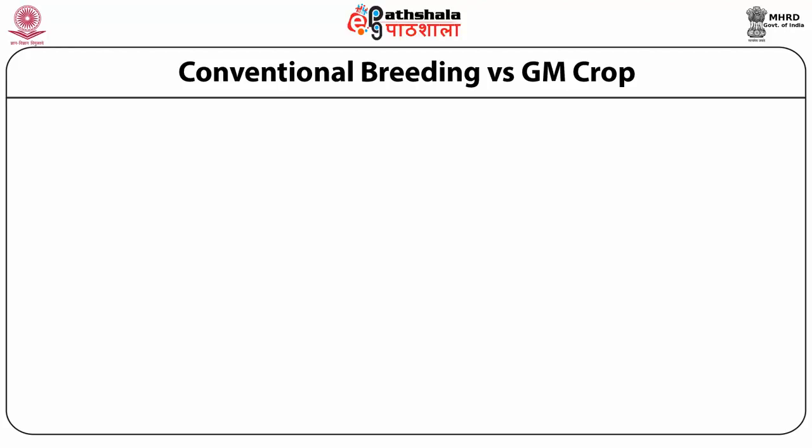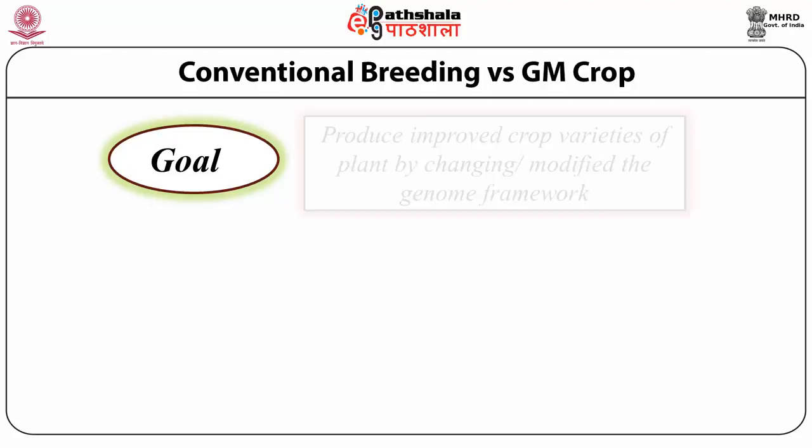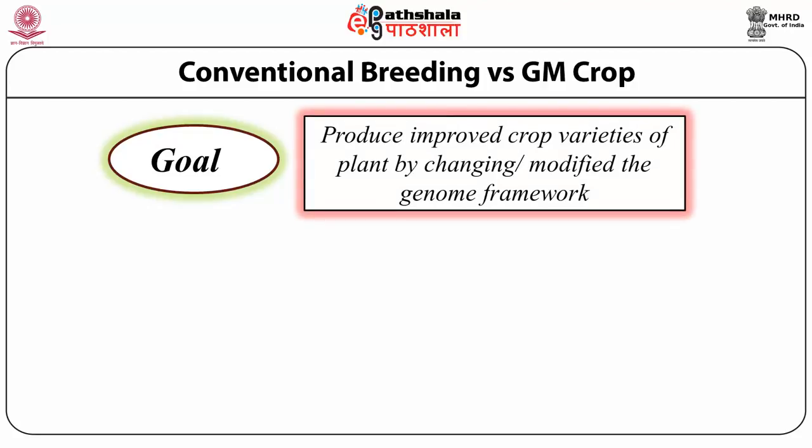In the breeding process, the following steps are generally used by breeders: first, objective; second, different types of variability; then selection; then evaluation and release of the particular cultivar in the crop field. The goal of conventional breeding or genetically modified crop breeding is to develop improved varieties of plants — they may be crop plants, horticulture plants, fruits, vegetable crops, etc.